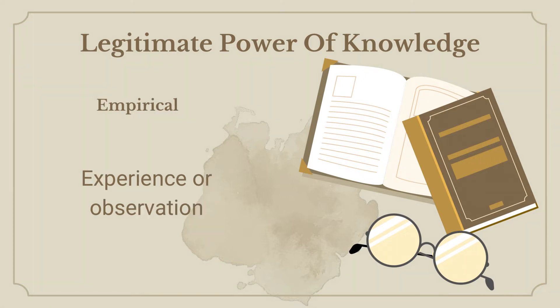Empirical: Knowledge is empirical if it can be verified. For something to be empirical, it has to be measurable and reliable. It must be noted, however, that not all measurements are empirical. Our knowledge is meaningless unless given correct interpretations.